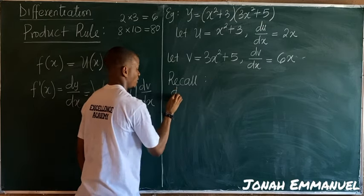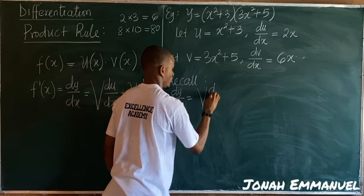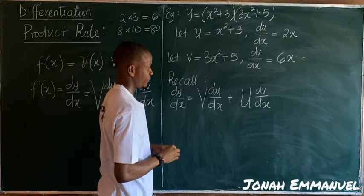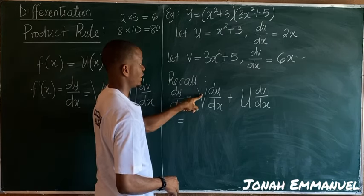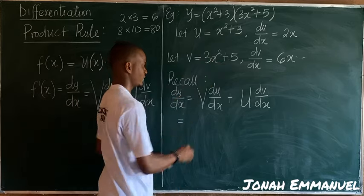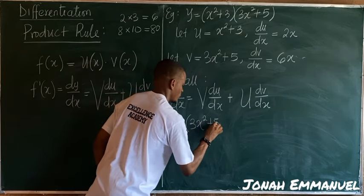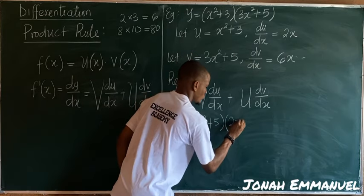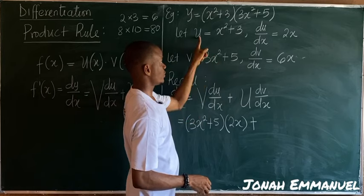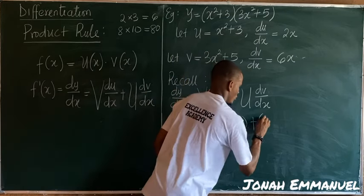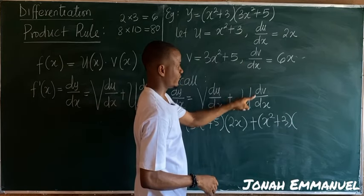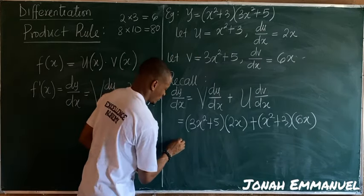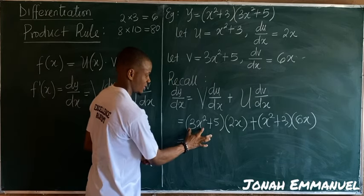Now recall the product rule formula: dy/dx = v·du/dx + u·dv/dx. Substituting values: v is 3x² + 5, so we get (3x² + 5) times du/dx, which is 2x. Plus u, which is x² + 3, times dv/dx, which is 6x.